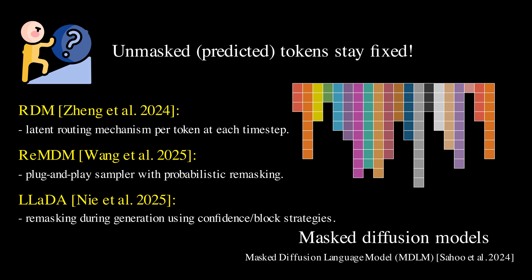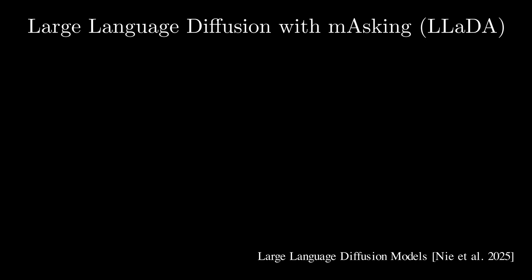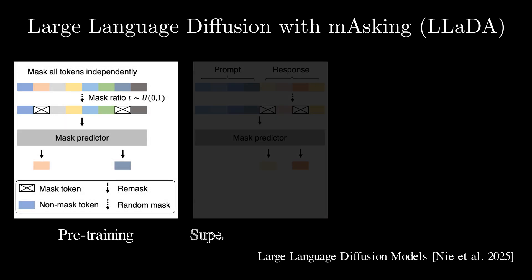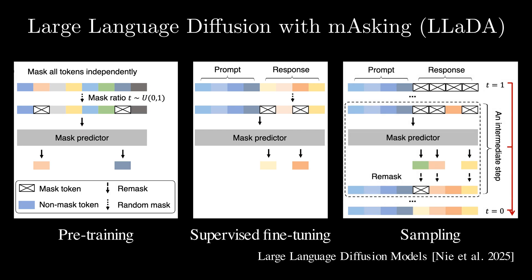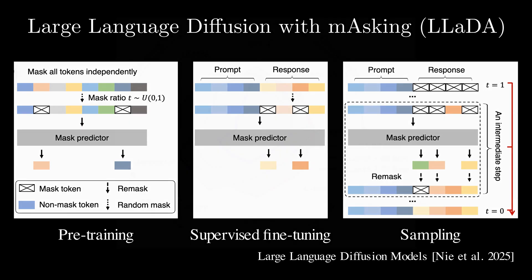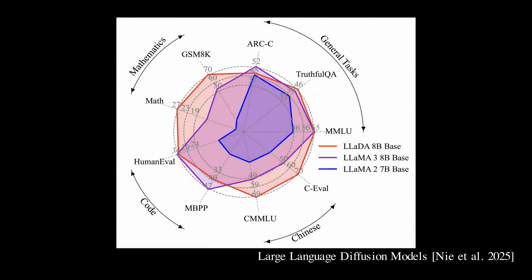Now the million-dollar question is, can mask diffusion models really compete with autoregressive models? For example, LADA is a mask diffusion model trained from scratch under the standard pre-training and supervised fine-tuning paradigm. The model generates the response by iteratively predicting and unmasking tokens. The author demonstrates that the LADA-8B achieves performance on par with leading LLMs, such as LLAMA-3-8B, in in-context learning tasks.